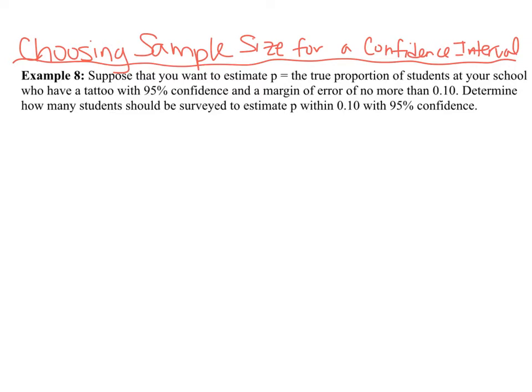What we are doing is we are given the margin of error, which is going to be 0.1. And here they want us to estimate the true proportion of students who have a tattoo with 95% confidence interval.